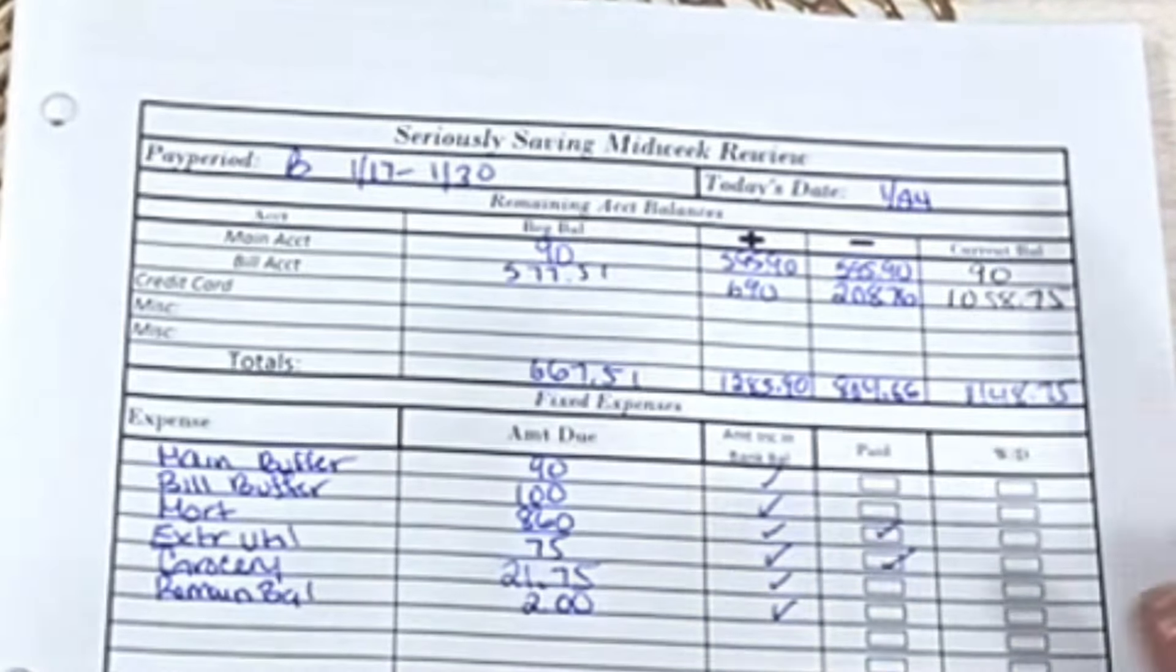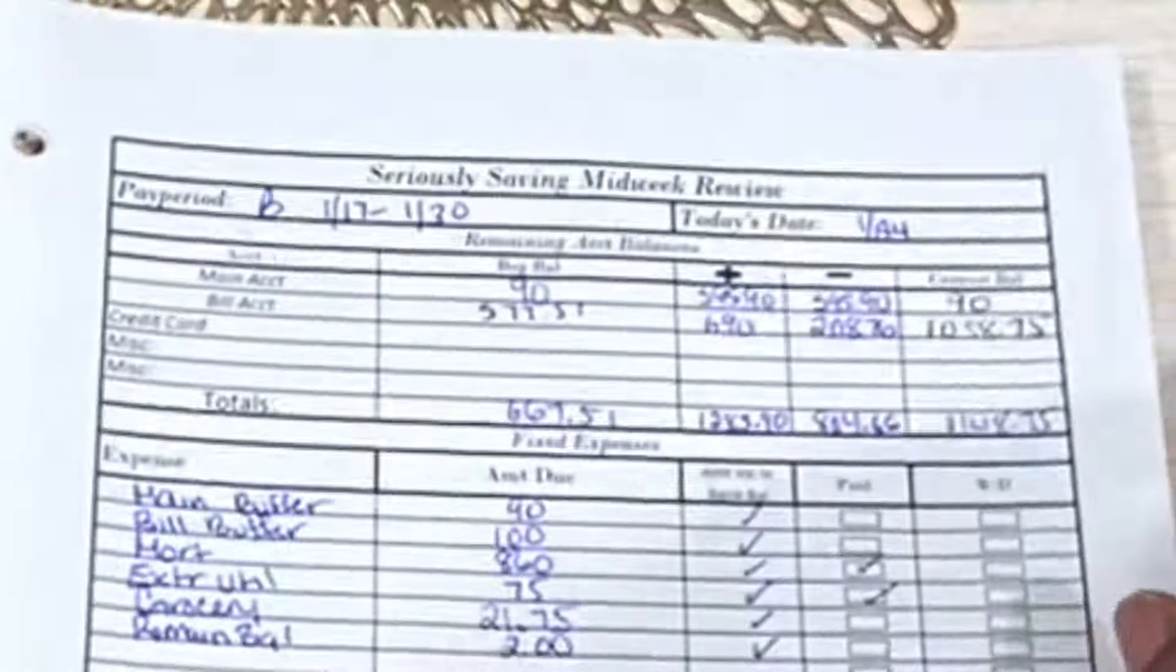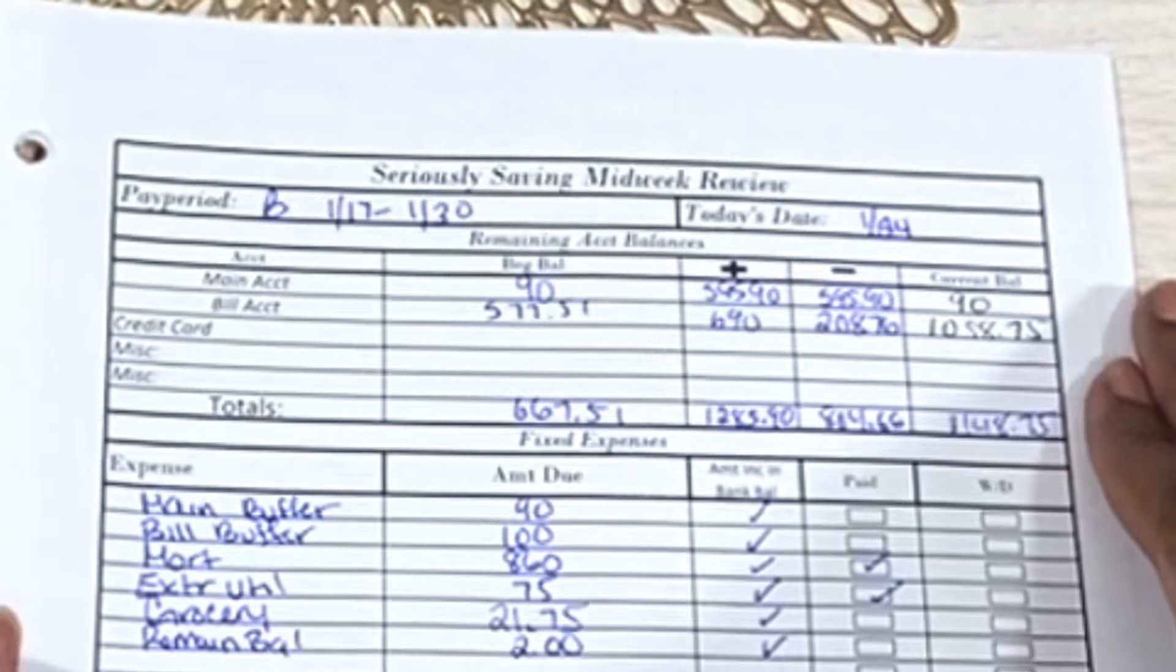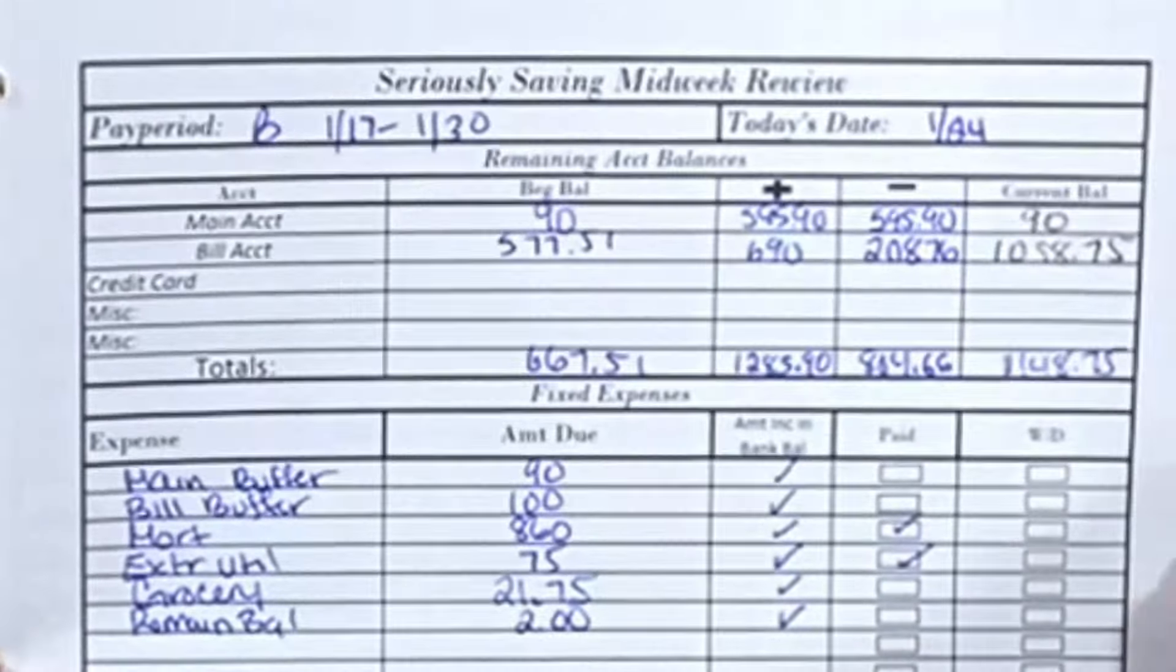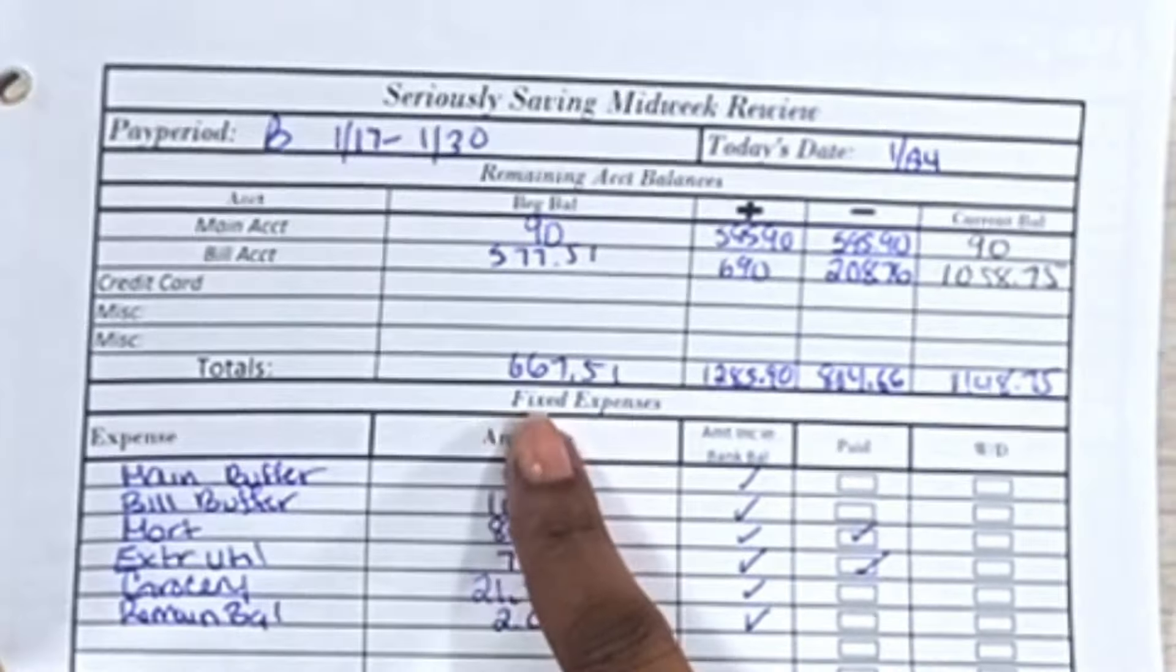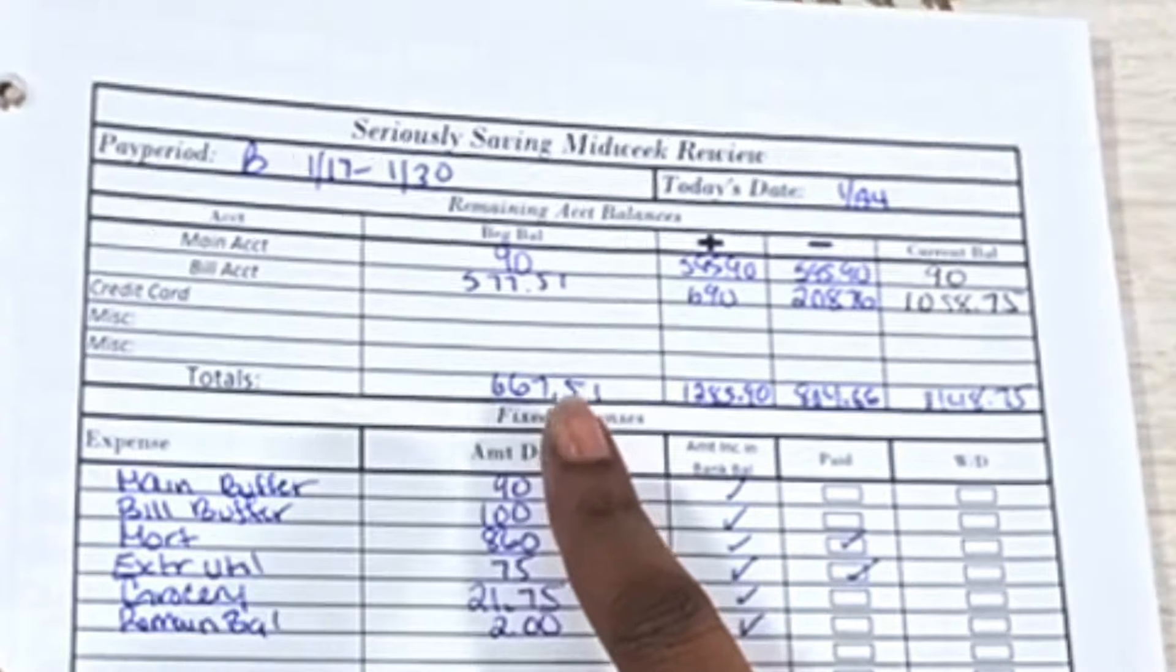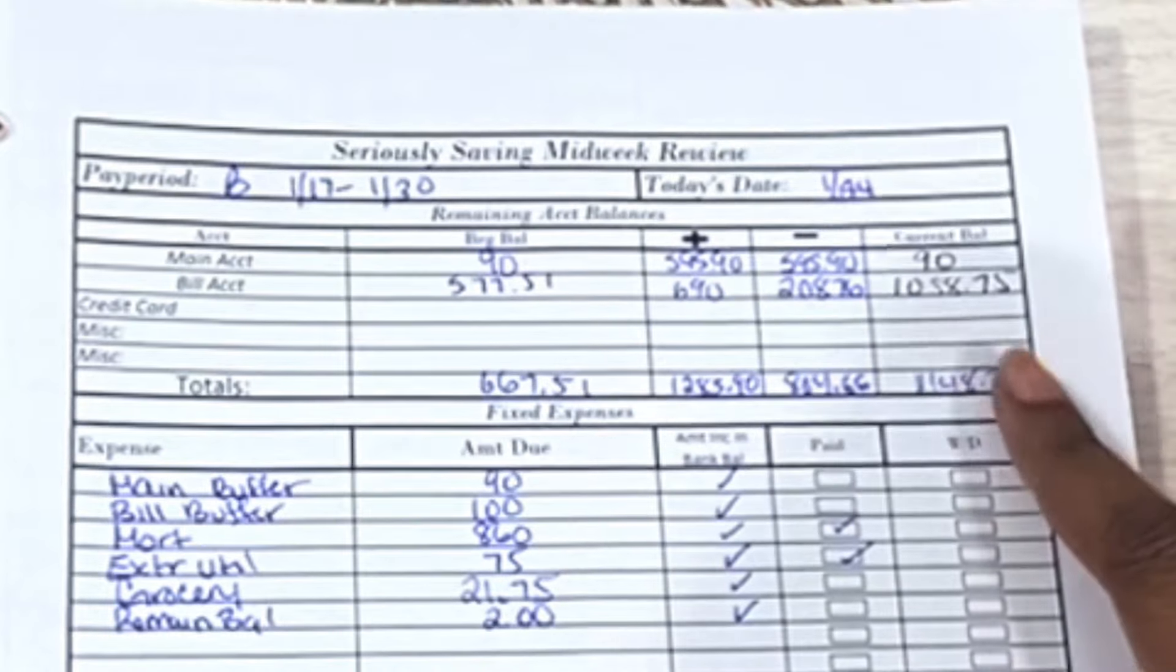And we have so far spent $804.66. So that $595.90 gets transferred from the main account to the bill account so that I can pay any bills that need to come out for the pay period. And we just keep the buffer in the main account in case anything comes up. That's just in case a bill comes out that I wasn't expecting. It's just a safety net basically.